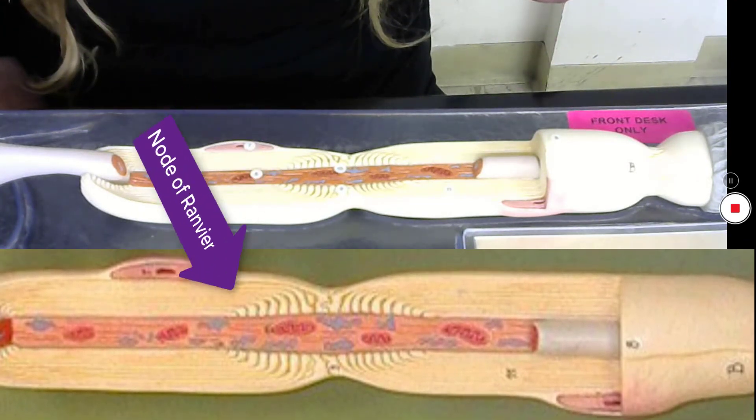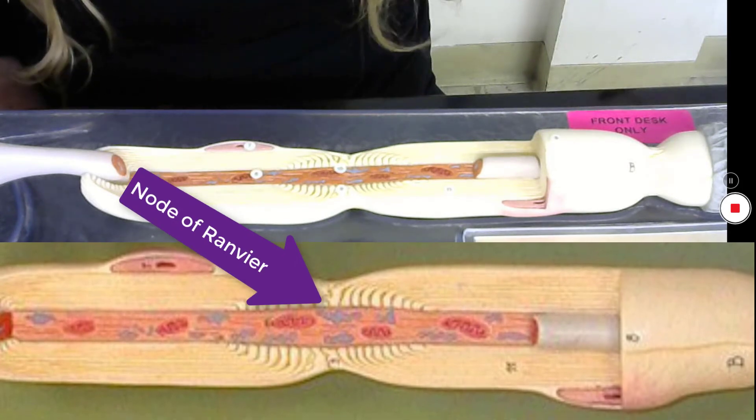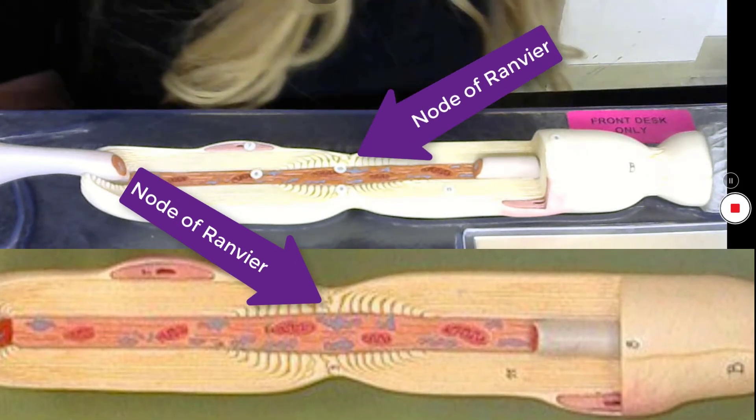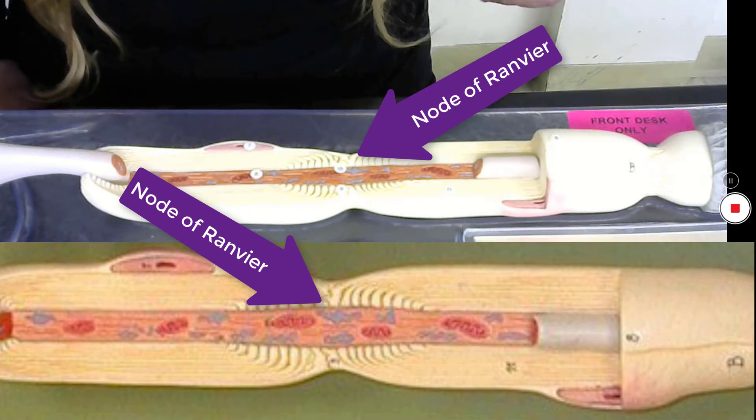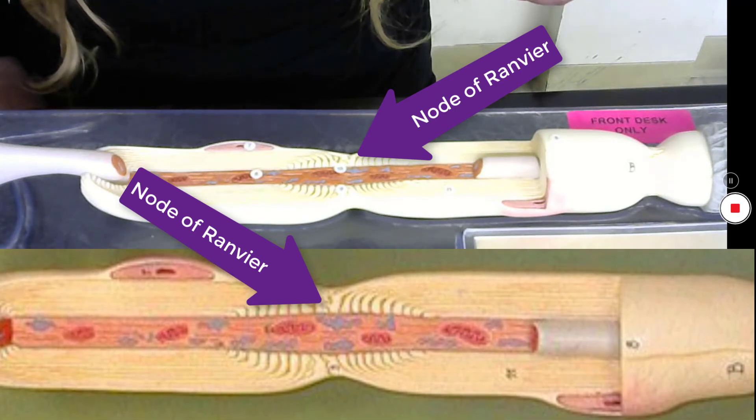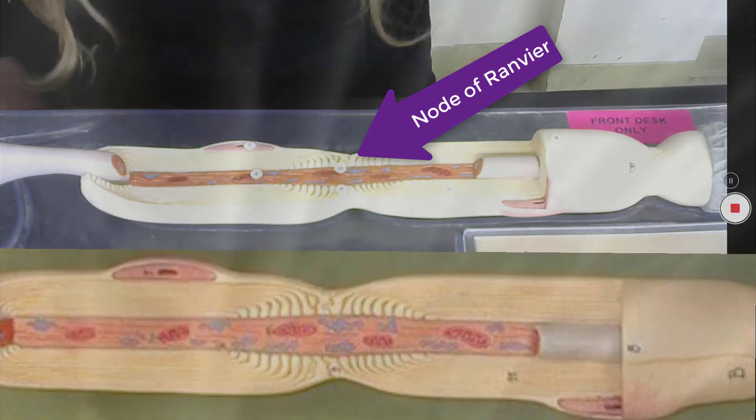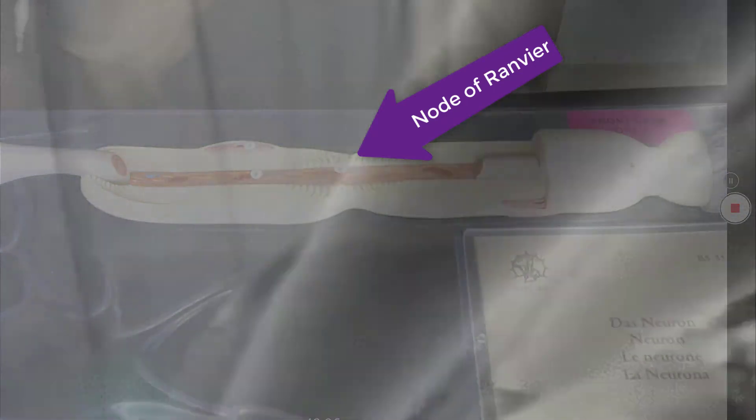And here between the myelin sheath, we have a gap between the myelin sheath called the node of Ranvier. That's it.